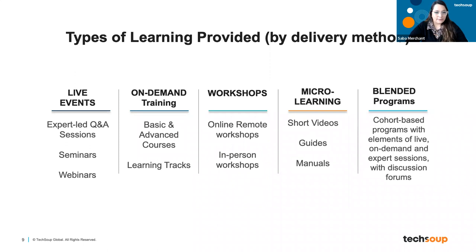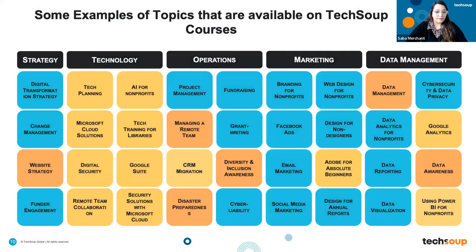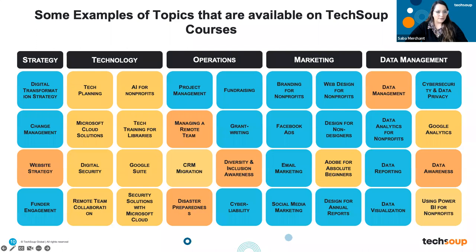In terms of variety of topics, we do have a variety of topics that we have courses on. The main pillars are strategy, technology, operations, marketing, and data management. Of course, since we have over 200 courses, they cover various topics. We do have some very interesting blended learning courses coming up in the near future, which we will share about very soon. I will now hand it over to Gray Harriman to continue.